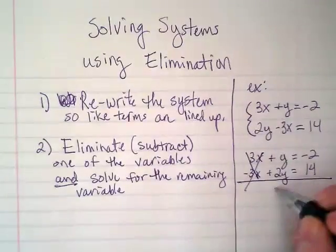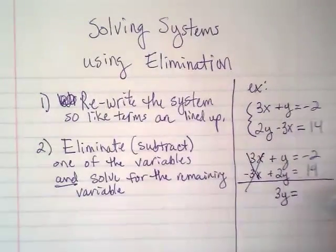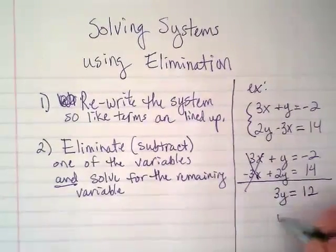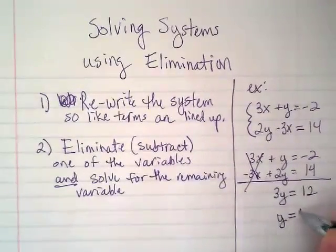y and 2y is going to give us 3y. Negative 2 and 14 is going to give us what? 12. So the y is equal to 4.